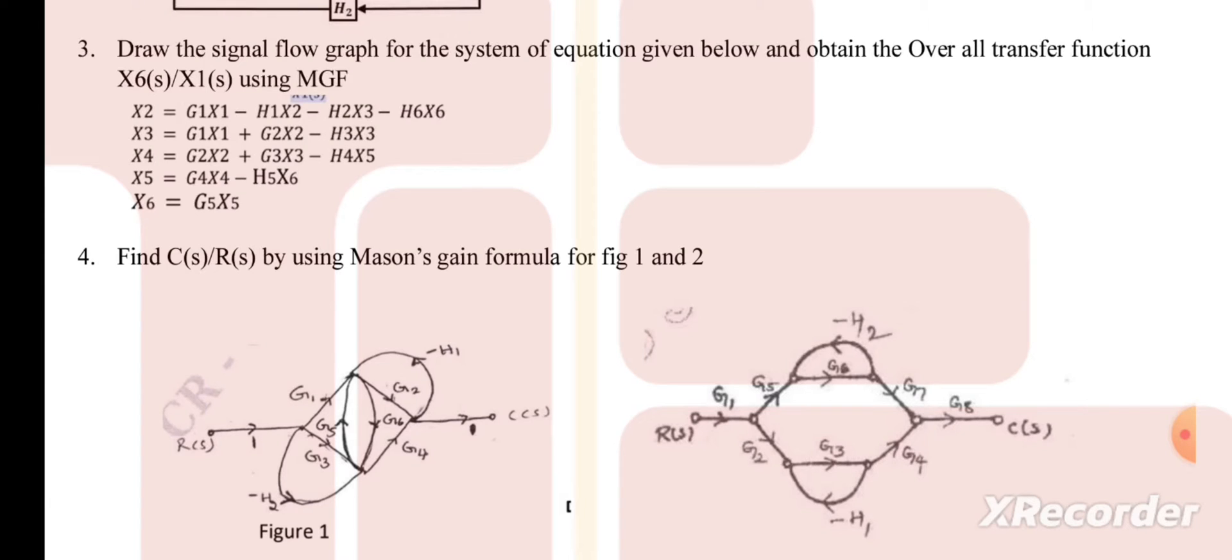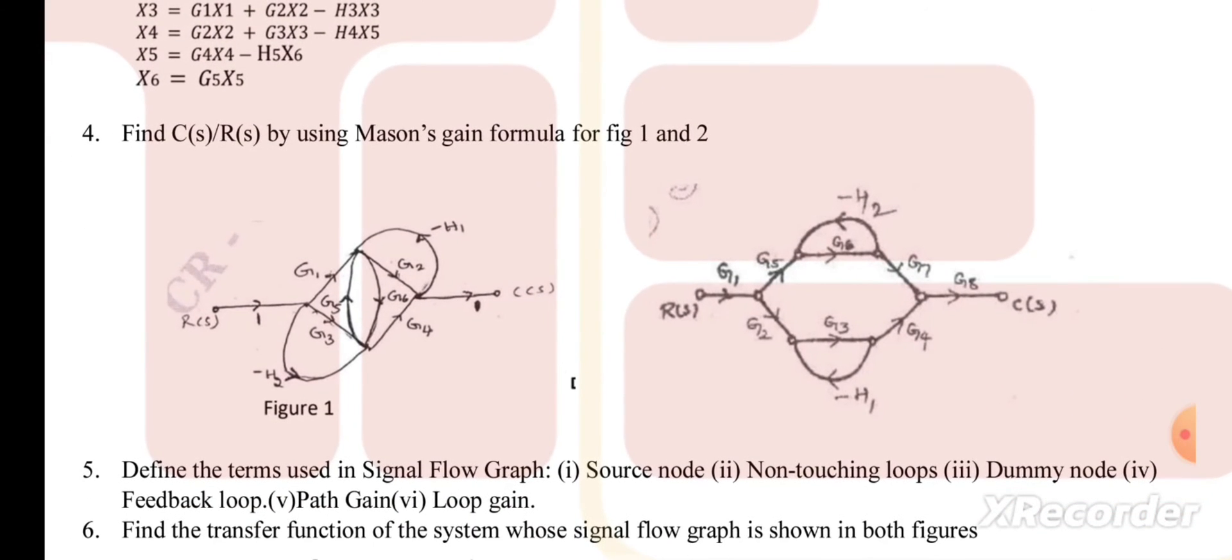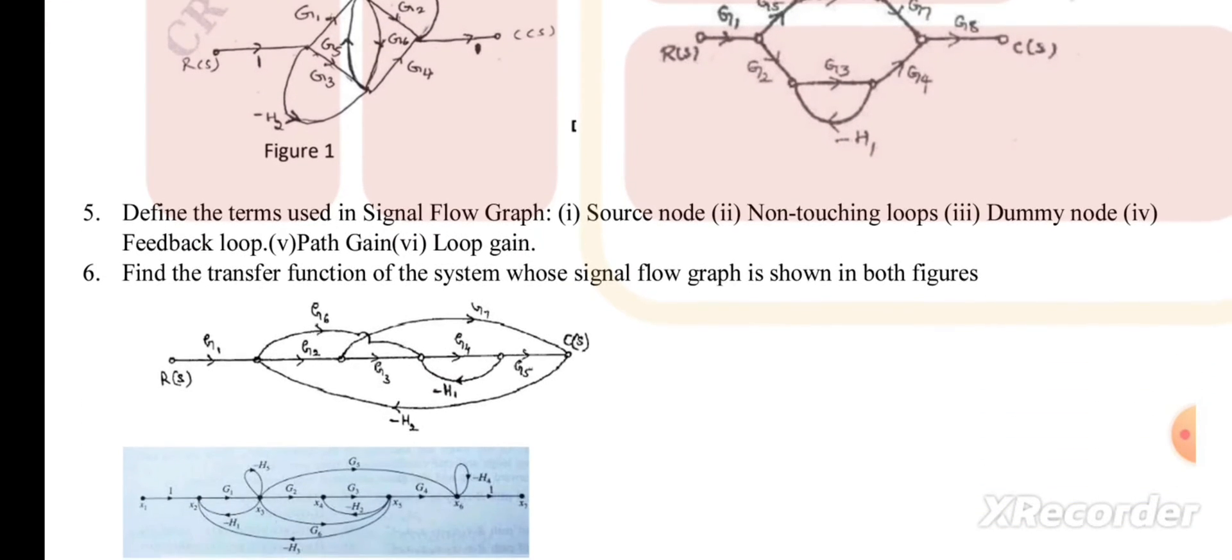You can see here using Mason's gain formula you need to find C(s) by R(s). They have given the figures here. And define the terms used in the signal flow graph like node, source node, non-touching loops, dummy node, feedback loop, path gain, loop gain, and find the transfer function of the system whose signal flow graph is given.